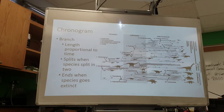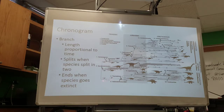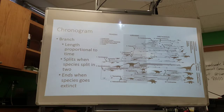Chronograms actually show time — the branches have a length proportional to the amount of time that has passed. They split at speciation events and end when a species goes extinct. For example, you can see a species that went extinct during the Triassic period or another that went extinct during the Cretaceous. The most common diagram types on the AP test are cladograms and phylogenetic trees, especially on free response questions where you're asked to draw your own.